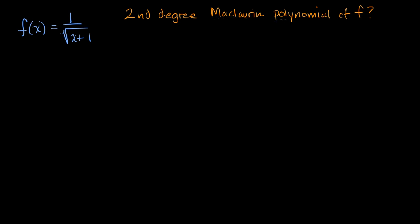Let's remind ourselves what a Maclaurin polynomial is. A Maclaurin polynomial is just a Taylor polynomial centered at zero. So the form of this second degree Maclaurin polynomial — we just have to find this Maclaurin expansion until our second degree term.